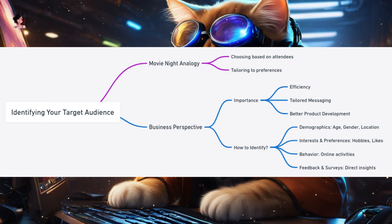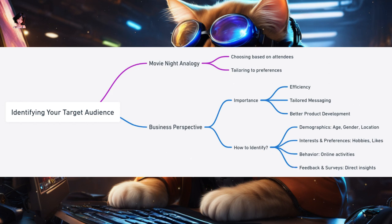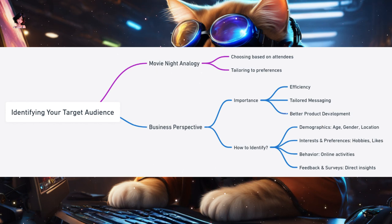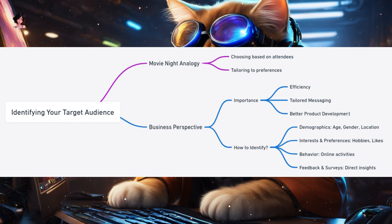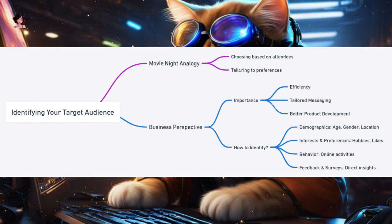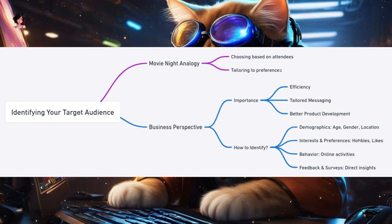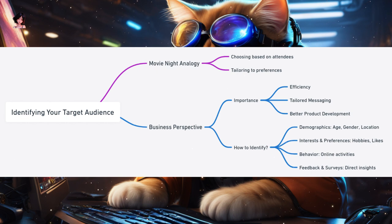How to identify your target audience: Demographics — basic information like age, gender, location, etc. Interests and preferences — what do they like, what are their hobbies? It's akin to knowing your friends love sci-fi, so you'd pick a movie like Star Wars or Star Trek. Behavior — how do they behave online, what websites do they visit? It's like noticing a friend always talks about superhero movies, so you'd consider something from the Marvel or DC Universe. Feedback and surveys — just as you might ask your friends for movie suggestions, in business you can use surveys or feedback forms to understand what your audience wants.